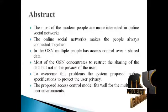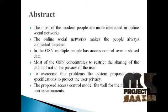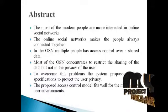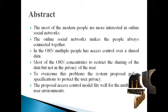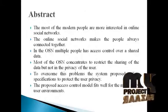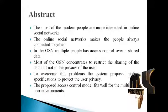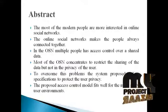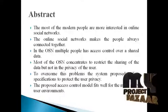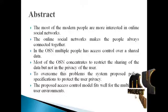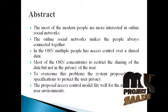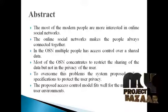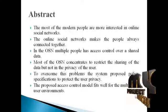To protect data, access control has become a feature of OSNs. A typical online social network provides each user with a virtual space containing profile information, a list of friends, and web pages such as Wall in Facebook where friends can post content and leave messages. A user profile usually includes information such as birthday, gender, interest, education, and work history. Users can upload content to their own sites or other spaces and tag other users who appear in the content.